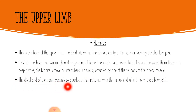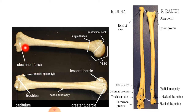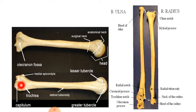The distal end of the humerus presents two surfaces that articulate with the radius and ulna to form the elbow joint. The head of the humerus takes part in the formation of the shoulder joint. The lesser and greater tubercles flank the intertubercular sulcus or bicipital groove, which accommodates the long head of the biceps brachii. At the distal part you can appreciate the olecranon fossa for the olecranon process of the ulna, the trochlea, and the capitulum. The capitulum accommodates the head of the radius and the trochlea articulates with the trochlear notch to form the elbow joint.